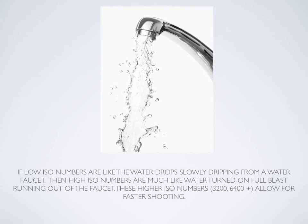Now, if low numbers for your ISO are like water drops slowly dripping from a faucet trying to fill a glass, then higher ISO numbers are much like your water turned on full blast, filling your glass very quickly. Because high ISO numbers like 3200 and 6400 plus allow you to shoot faster — much like water turned on full blast going to fill your cup very fast. Shooting at higher ISO numbers allows you to shoot faster as well.